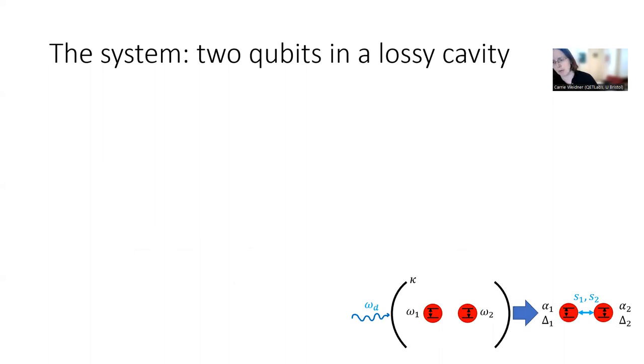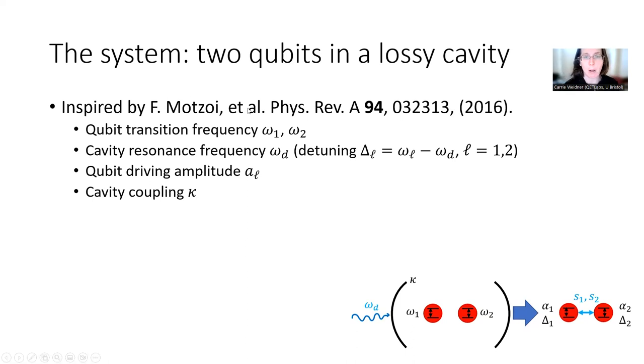So our system here is two qubits in a lossy cavity, which I've got illustrated down here. This is inspired by some work by Matsui et al., which is published in Phys. Rev. A. If you have any questions about this system, you can definitely go in there. And it defines basically two qubits with transition frequencies omega-1 and omega-2, and a cavity resonance frequency omega-D, which defines a detuning, which is the detuning of omega-1 or omega-2 from our cavity. The qubits are driven with some amplitude alpha-L, which this basically tells us, for example, how much light we have in our cavity that's driving the qubits. And there's this cavity coupling kappa.